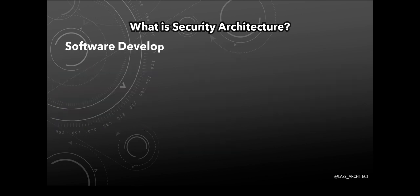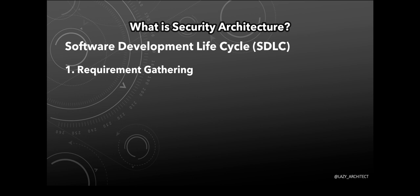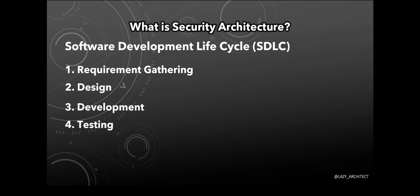So let's go back to the basics of the software development life cycle, also known as SDLC. At a very high level, the generic SDLC phases start with requirement gathering. Once requirements are successfully gathered, the design is built. The architects hand over the design to developers so that the code can be written. Once the code is written, it moves to the testing phase where quality assurance happens. Then finally, the build is moved to deployment, also known as ops and maintenance.